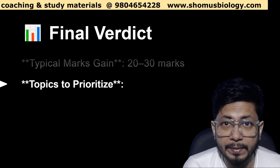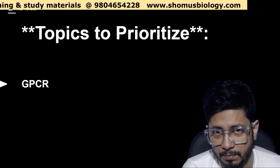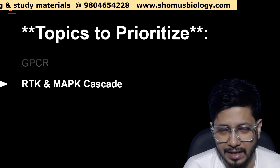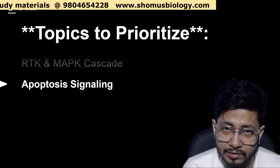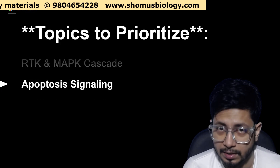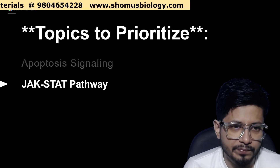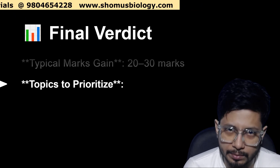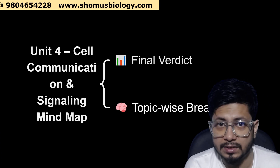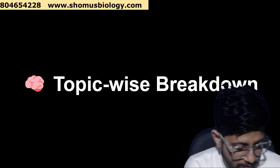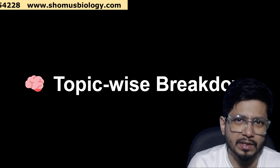The topics to prioritize are: GPCR (G protein-coupled receptor), RTK (receptor tyrosine kinase), MAP kinase cascade signaling, apoptosis signaling including intrinsic and extrinsic pathways, JAK-STAT pathways, and JUN-FOS. The topic-wise breakdown is very important to understand exactly which topics have repeated questions every single session.